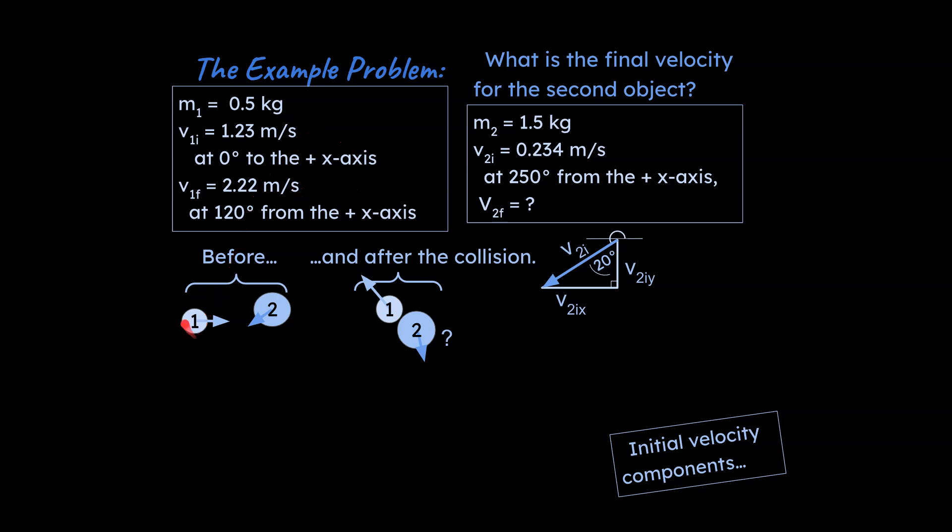This is given information about the first object over here both before and after the final velocity here for instance, and this is information about the second object both before the collision and after the collision is going to be our unknown. So we're going to ask what is the velocity of the second object after they collide with each other and in what direction is that going to be.